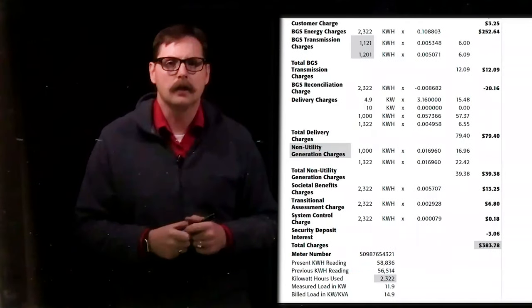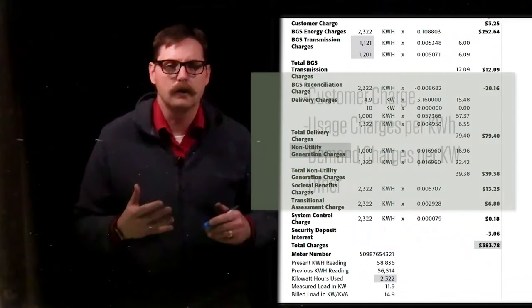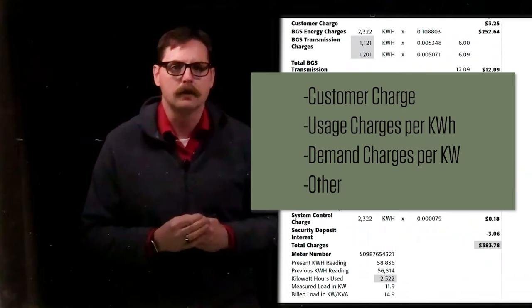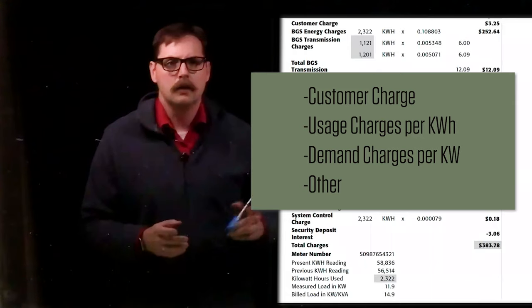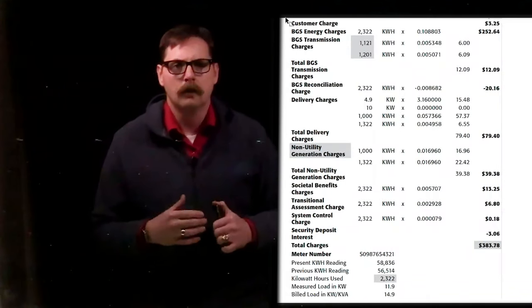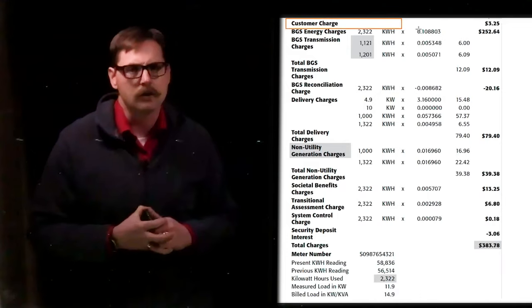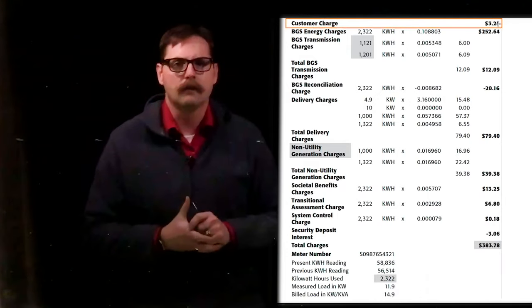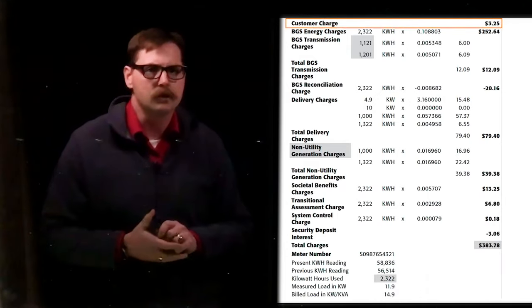Now we're going to spend some time looking at our example electric bill, and we're going to try to identify those four main components within our electric bill. You can see beside me here our example electric bill. And first, let's look for that customer charge. That customer charge is clearly identified at the top at $3.25.